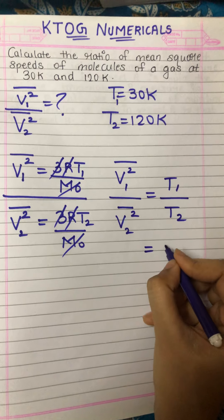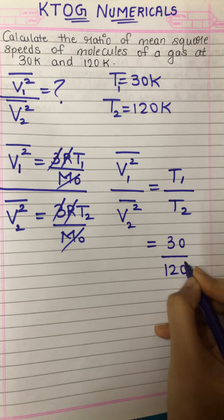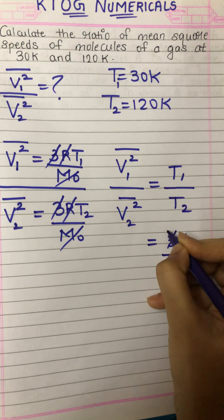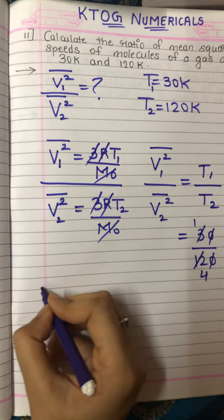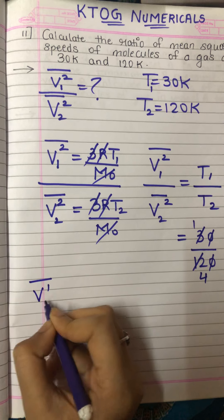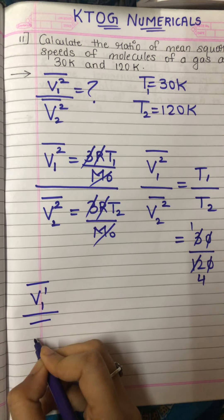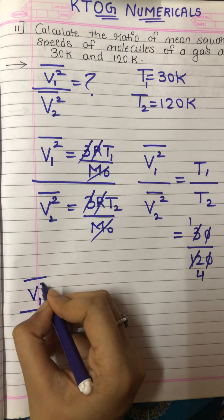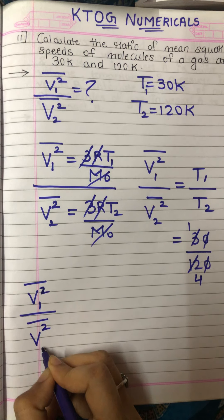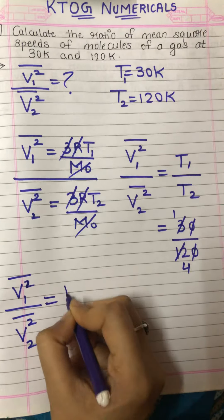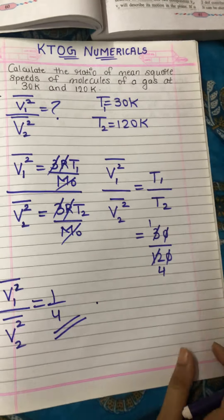Let's substitute: T1 is 30 and T2 is 120. Cancelling the zeros, we get 3 over 12, which simplifies to 1 upon 4. So the ratio of mean square speed of the first gas upon mean square speed of the second gas is equal to 1 upon 4. This is the answer.